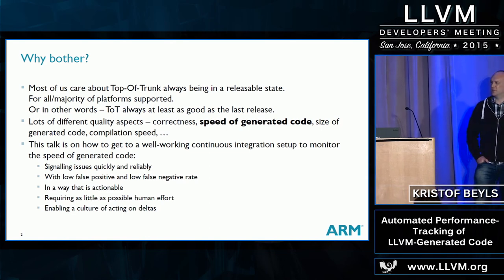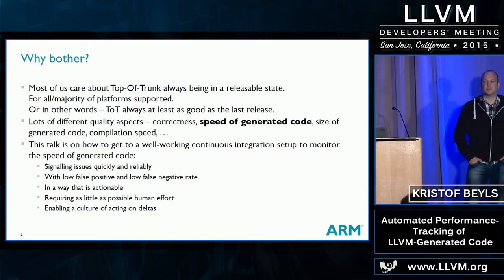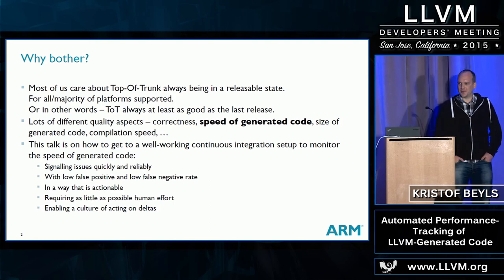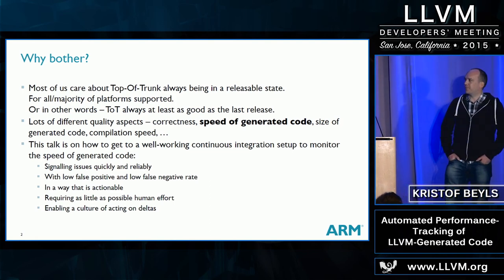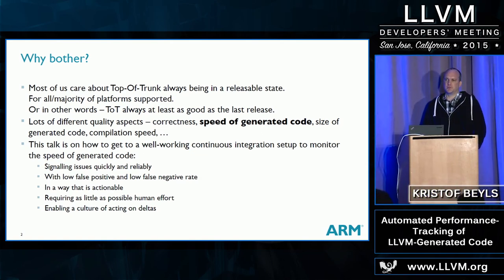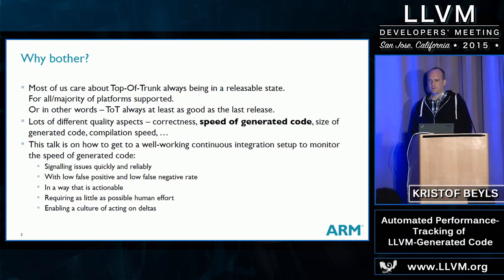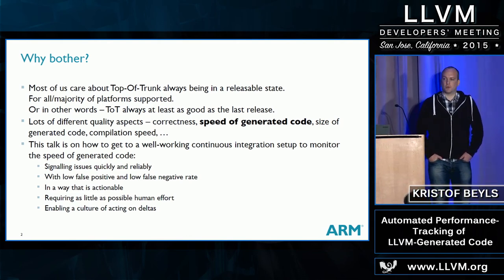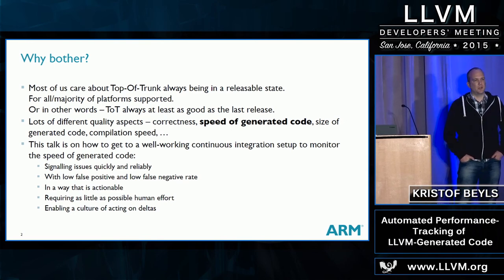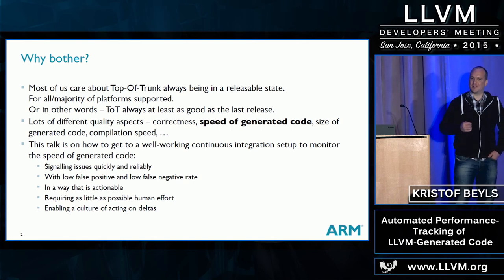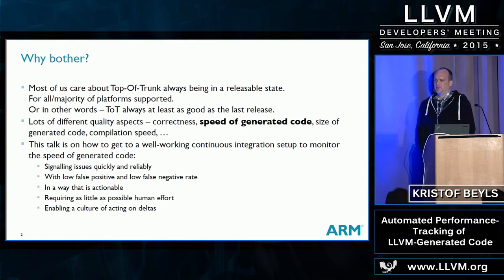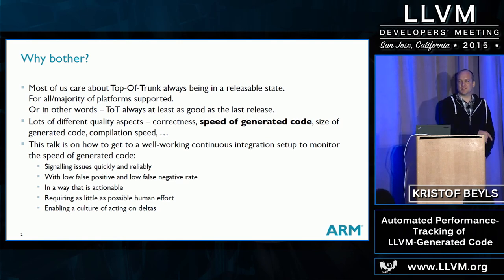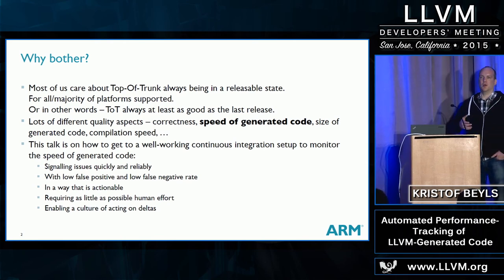What do we really want to get out of a continuous integration system to track performance? We want issues to be signaled quickly. We want low false positive rates. We want low false negative rates. When we get a message saying your commit seems to have regressed something, we want that information to be clear and actionable — you know immediately what to do.